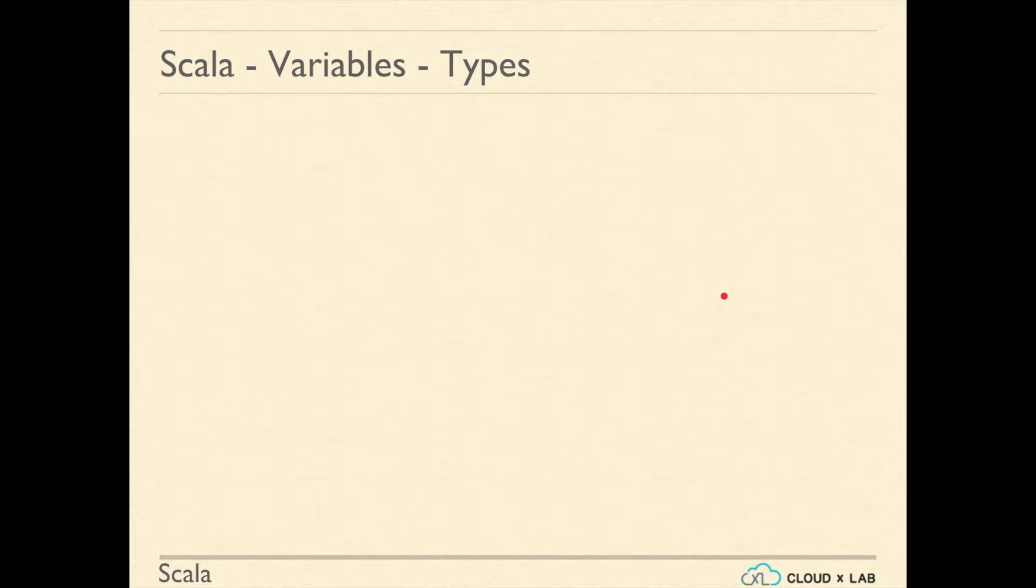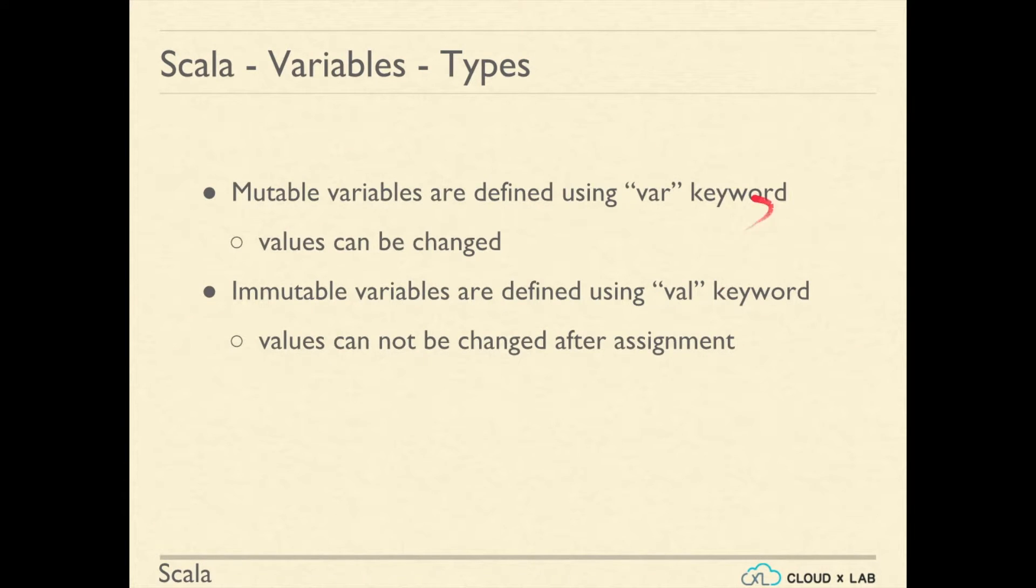There are two types of variables in Scala: mutable and immutable. Mutable variables are defined using the "var" keyword and their values can be changed. Immutable variables are defined using the "val" keyword and their values cannot be changed once assigned.